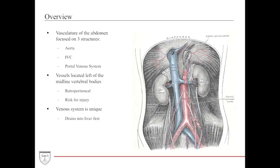The aorta, which is the primary arterial supply to the abdominal, pelvic, and lower extremities, is a retroperitoneal structure located left of the midline vertebral bodies. The venous system is very unique because it drains directly into the liver for detoxification and nutrient processing, rather than to the inferior vena cava and heart.